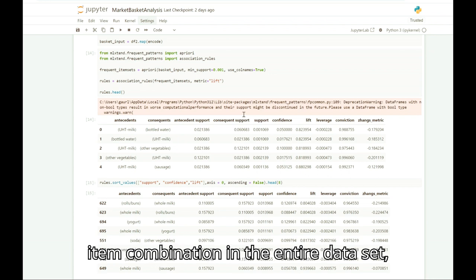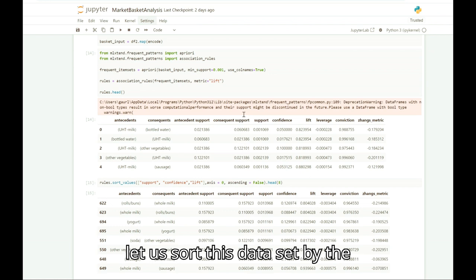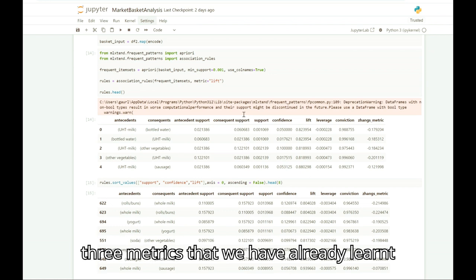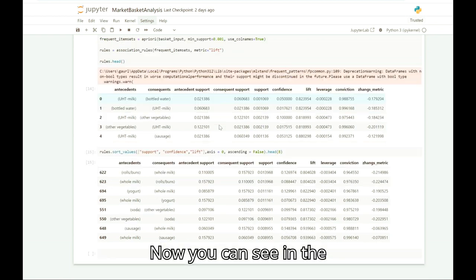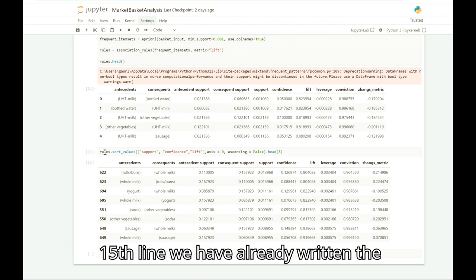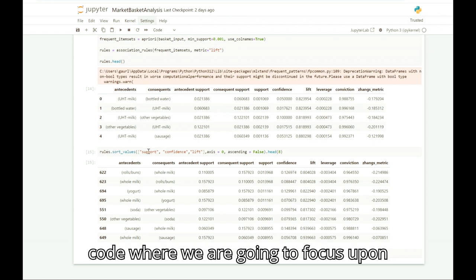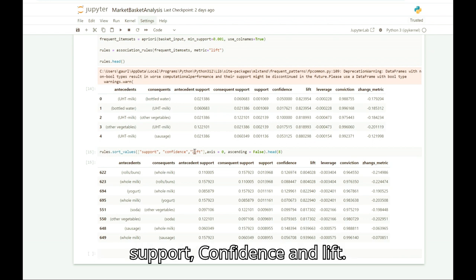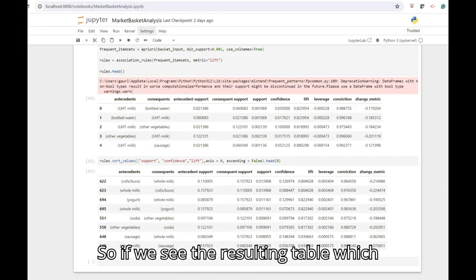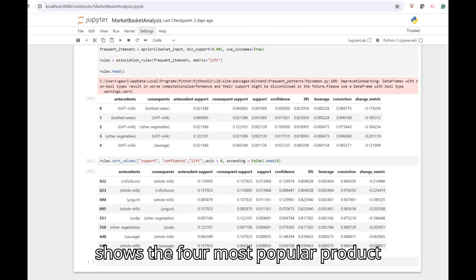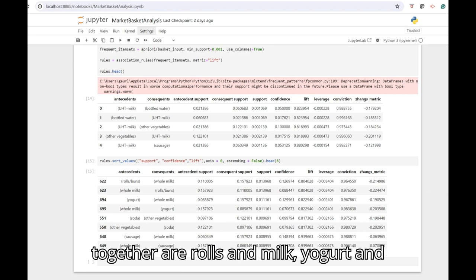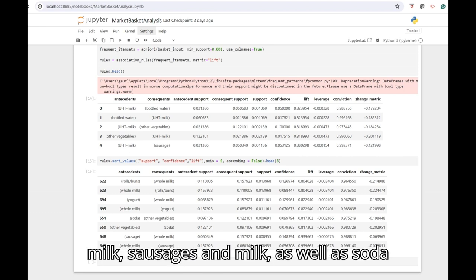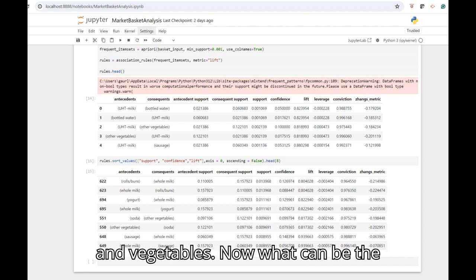To get the most frequent item combinations in the entire dataset, let us sort this dataset by the three metrics that we have already learned: support, confidence, and lift. Now you can see in line 15 we have already written the code where we are going to focus upon support, confidence, and lift. The resulting table shows the four most popular product combinations that are frequently bought together: rolls and milk, yogurt and milk, sausages and milk, as well as soda and vegetables.